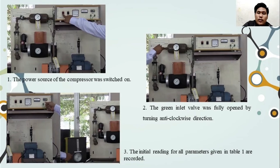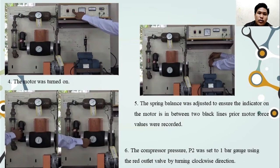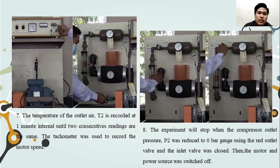My name is Baha bin Shaoli and I will present the methodology and conclusion. For the methodology: step one, the power source of the compressor was switched on. Step two, the green inlet valve was fully opened by turning anti-clockwise. Step three, the initial readings of all parameters in Table 1 were recorded. Step four, the motor was turned on. Step five, the spring balance was adjusted to ensure the indicator on the motor is between two black lines, and prior motor force values were recorded. Step six, the compressor pressure P2 was set to one bar gauge using the red outlet valve by turning clockwise. Step seven, the temperature of the outlet air T2 was recorded at one-minute intervals until two consecutive readings are the same.